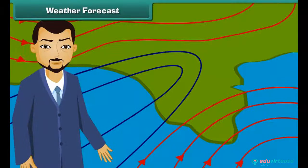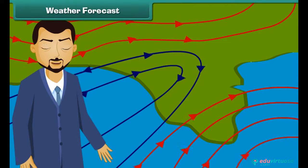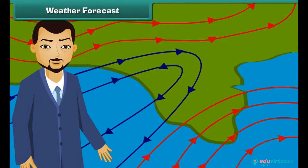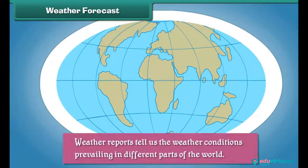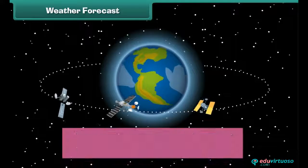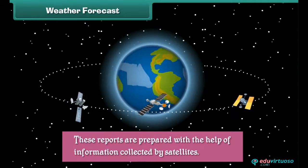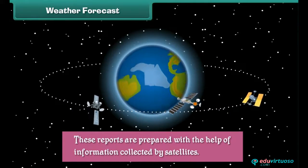Prediction of the future weather conditions of an area is called weather forecast. Weather forecast predicts the temperature, humidity and possibility of rainfalls in a particular area in the near future. Weather reports tell us the weather conditions prevailing in different parts of the world. These reports are prepared with the help of information collected by satellites.